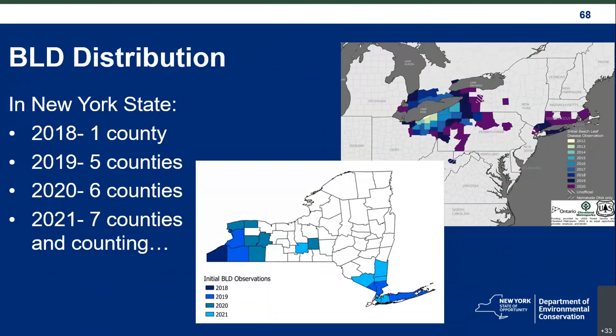As for the distribution, the map shows where the disease spread out of Ohio. In New York State, we first discovered it in 2018 with one county — Chautauqua. In 2019 we had five new counties, including a surprising jump to Suffolk County and Westchester and Rockland counties in the southeast. In 2020, six new counties. In 2021, seven new counties and counting, including areas in central New York, with continued expansion in the southeastern part of the state. We really need more eyes out looking for this disease to help us confirm where it is.